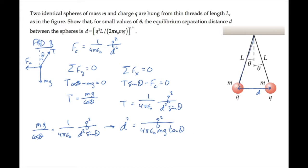If we look at the triangle that I'm outlining here, we can see that sine of theta is the ratio of the opposite side to the hypotenuse, which is d over 2 divided by L.